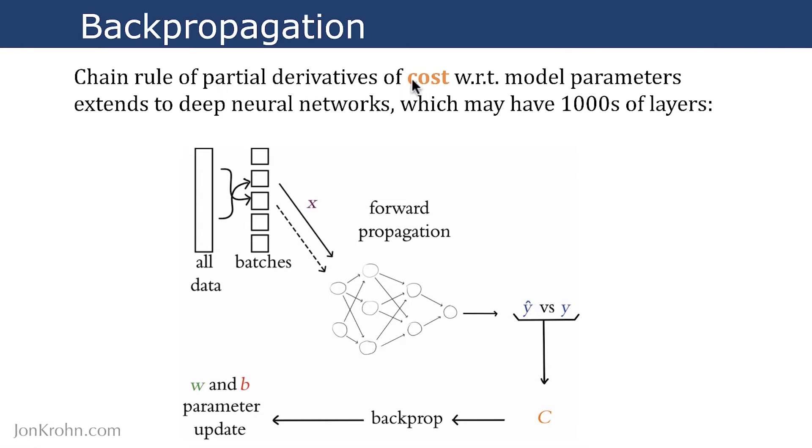The partial derivatives of cost with respect to model parameters, that concept, now that you understand it, having done it on a simple regression model that only has two parameters, slope M and Y-intercept B, that exact same theory extends to deep neural networks, which might have millions or billions of model parameters spread across thousands of layers.